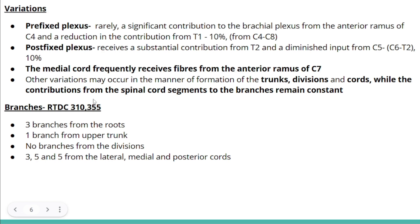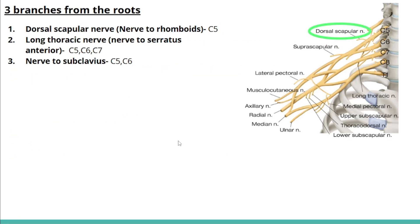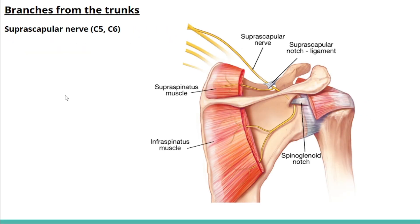To help you remember, a few numbers are assigned to these branches: three branches from the roots, one branch from the trunk, no branches from the divisions, and the cords give 3-5-5 — meaning the lateral cord gives 3 branches, the medial cord gives 5 branches, and the posterior cord gives 5 branches. The three branches from the roots are the dorsal scapular nerve, which is the nerve to the rhomboids; the long thoracic nerve, which is the nerve to serratus anterior; and the nerve to subclavius. The suprascapular nerve is the one branch from the trunk, supplying the supraspinatus and infraspinatus muscles.